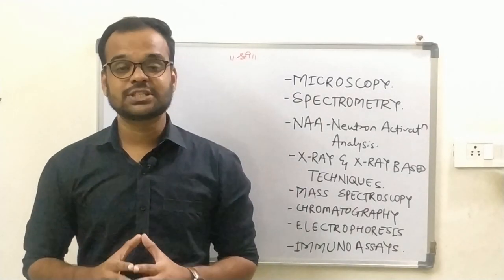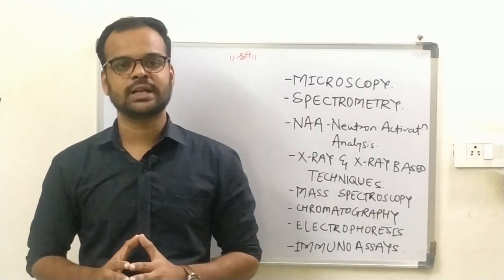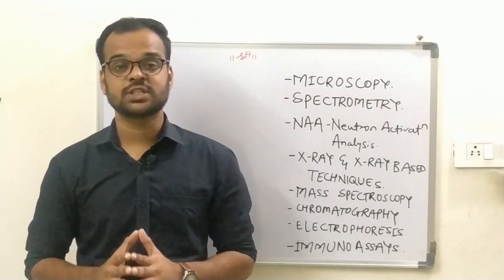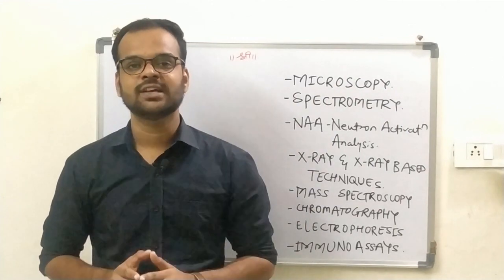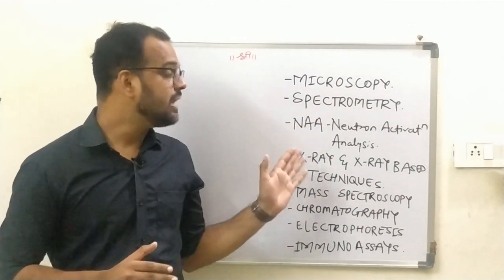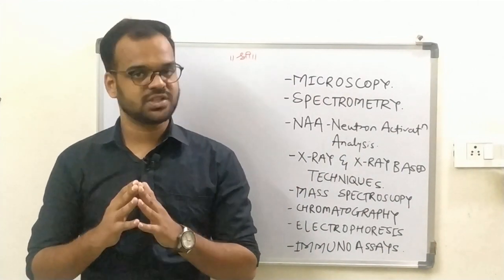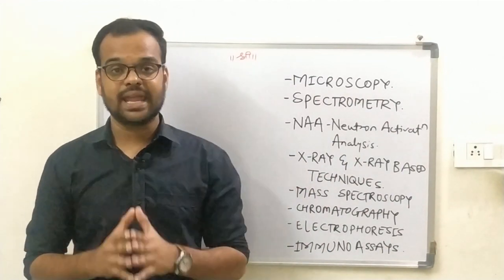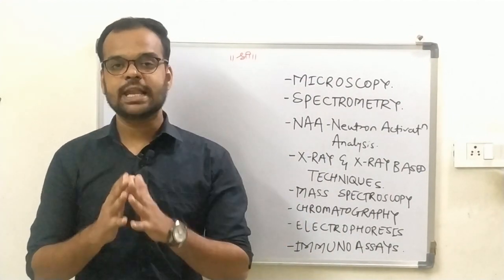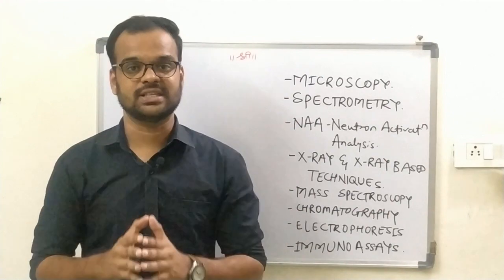Let's talk about the different instrumental techniques. As you can see here, these are the different instrumental techniques used in the forensic science field, starting with microscopy, spectrometry, NAA that is neutron activation analysis, x-ray and x-ray based techniques, mass spectroscopy, chromatographic techniques, electrophoresis, and immunoassays.